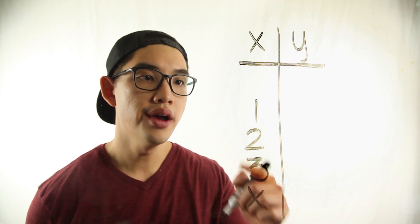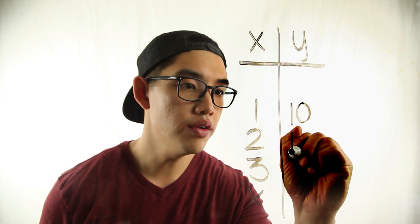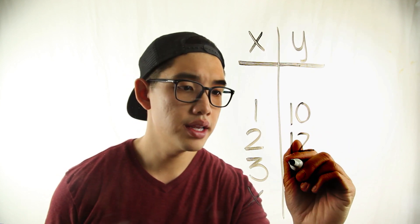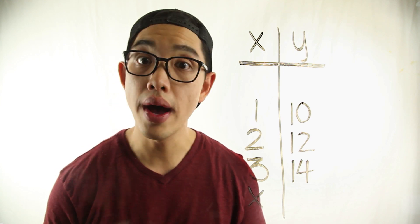Let's do another example. For this function table right here, if I put in a one I'm gonna get a ten. If I put in a two I'm gonna get twelve. If I put three I'm gonna get fourteen. Pause the video, see if you guys can figure out what the function rule is.